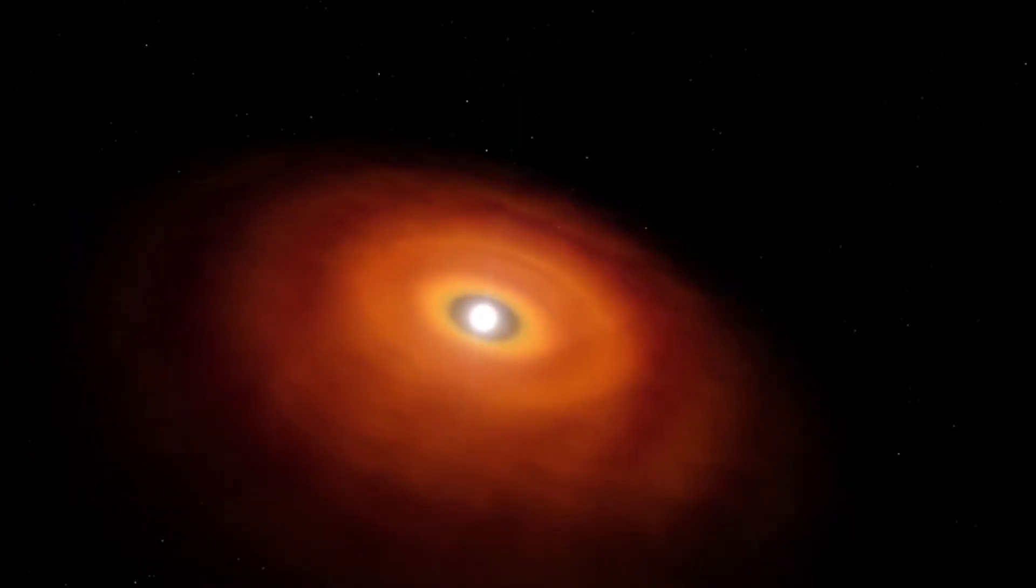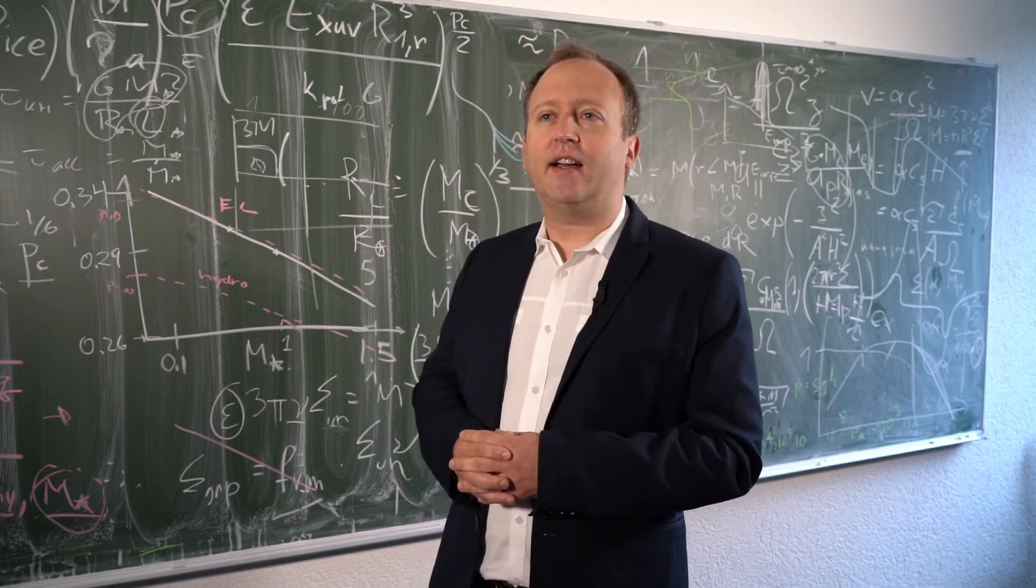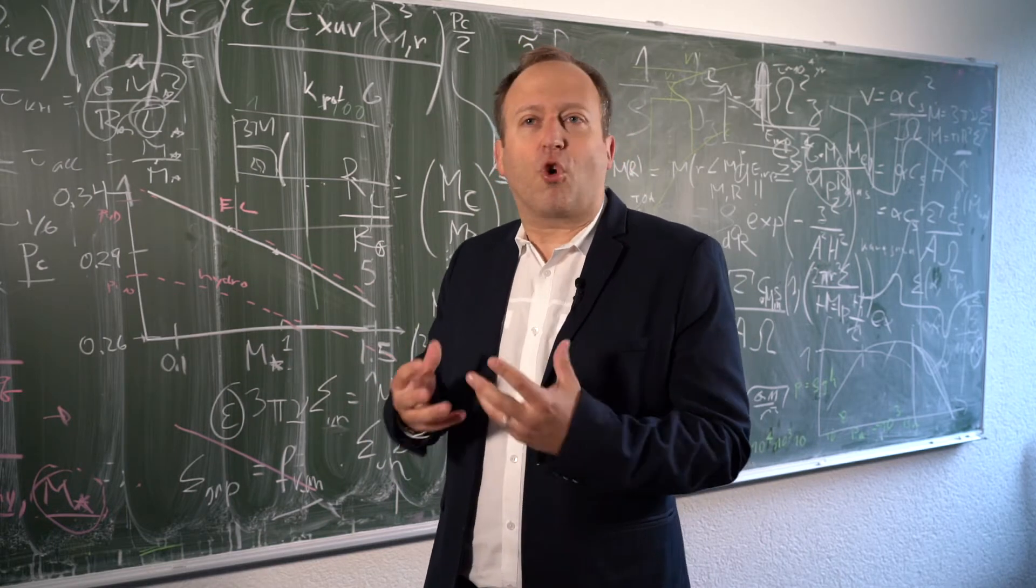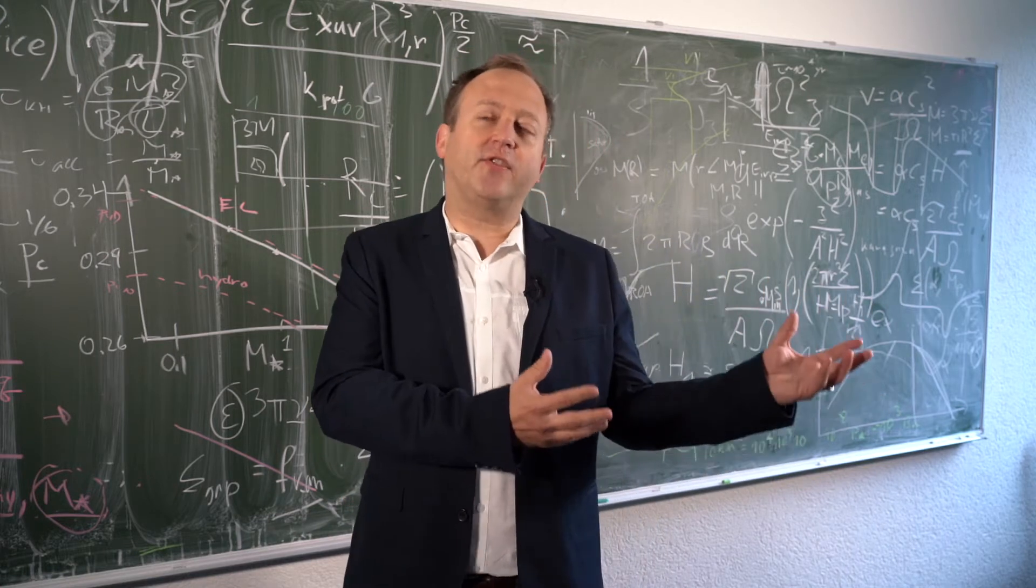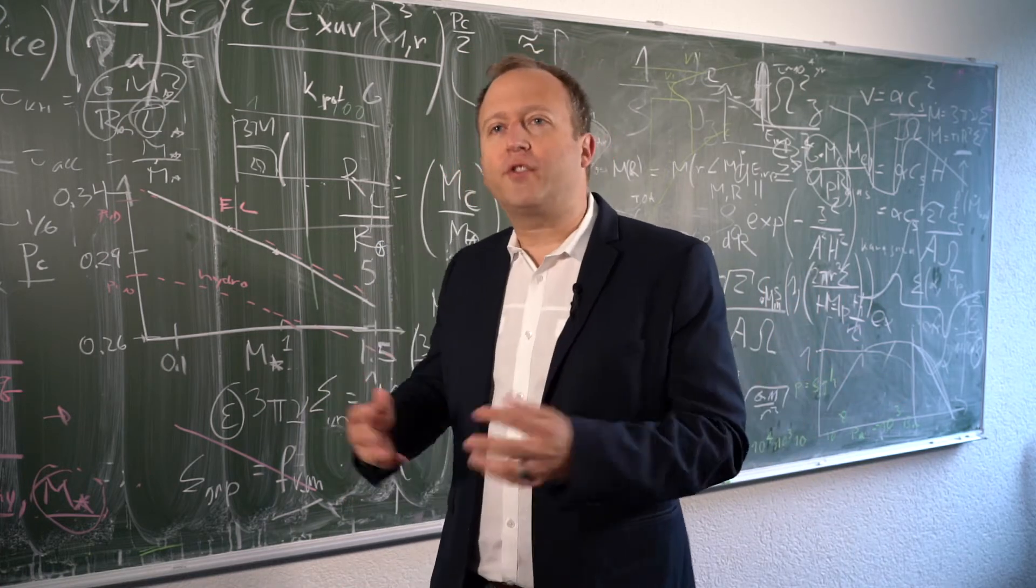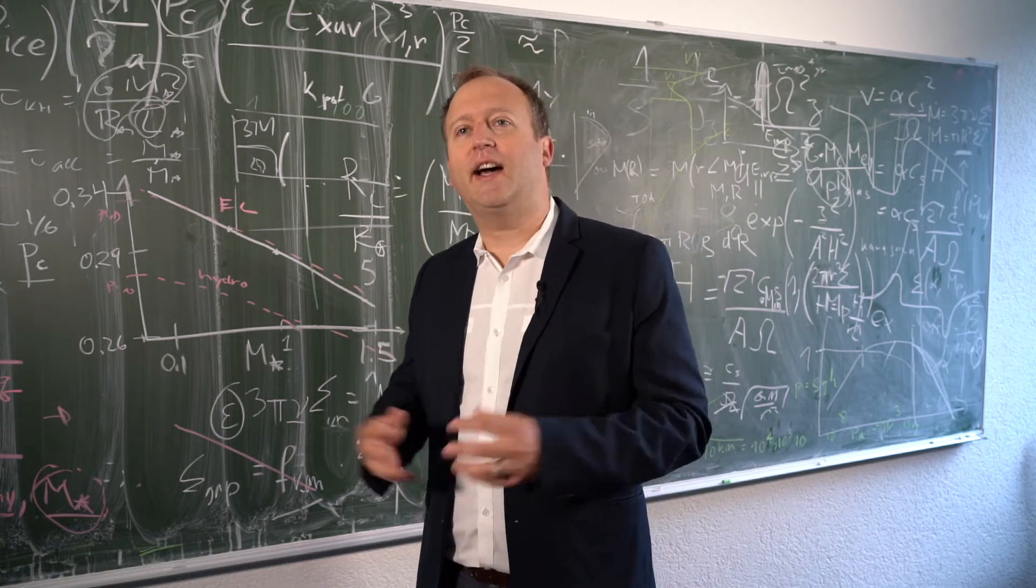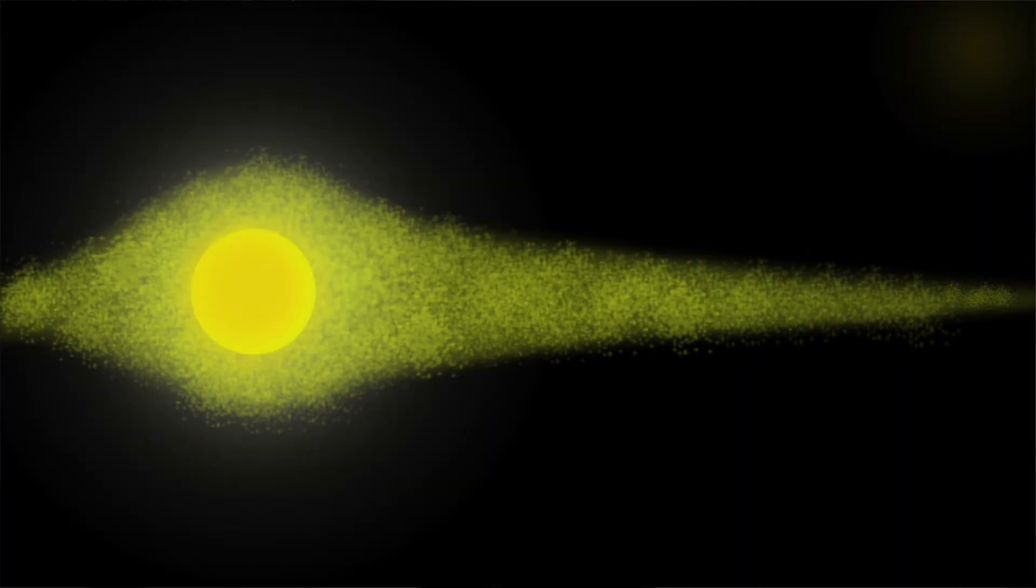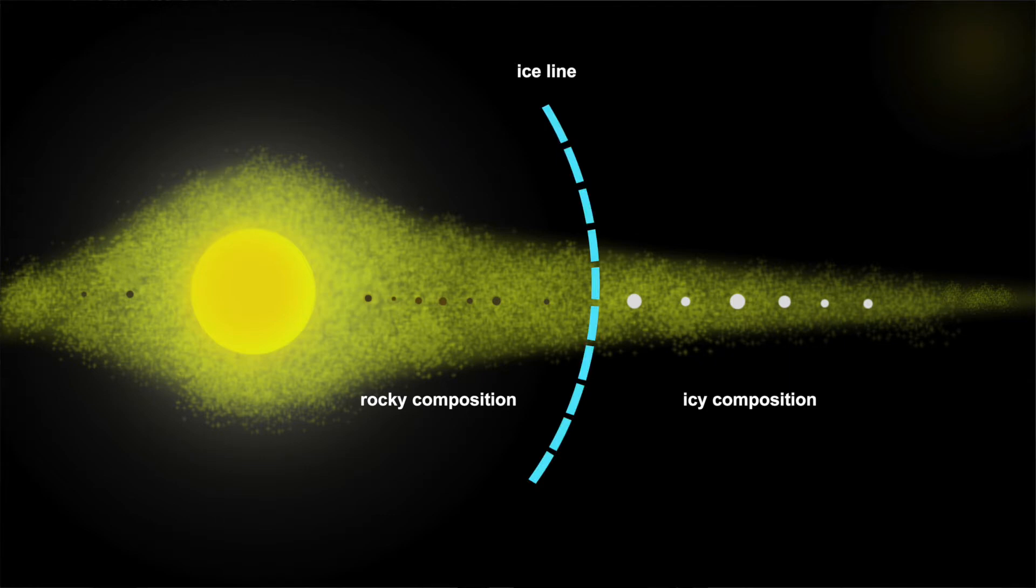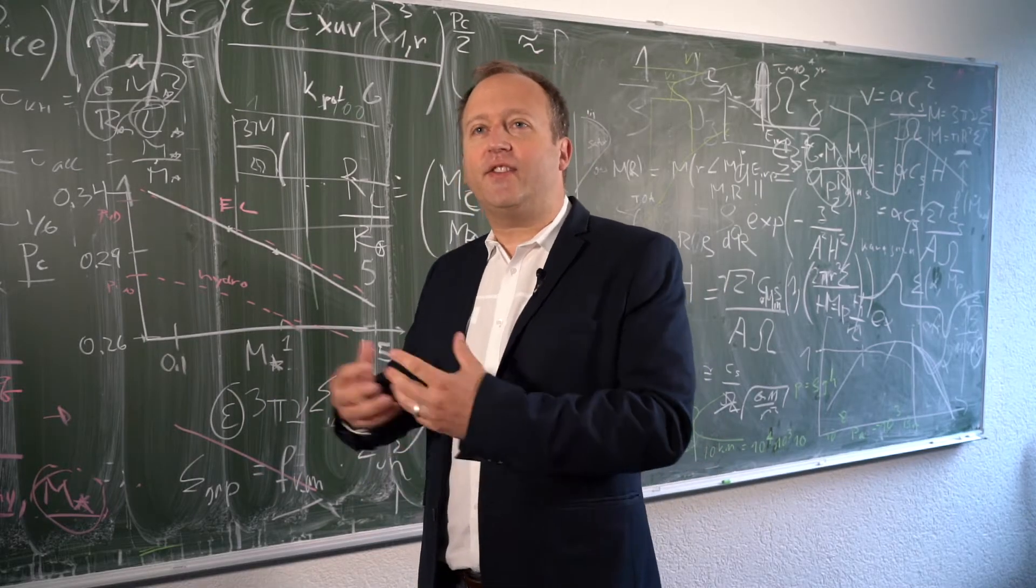This has an important consequence on the composition of the dust grains. In the inside they are made of rocky material, silicates and iron, and outside it's cold enough so that water can condense also. There is a line where there is this change between rocky and icy composition called the ice line, and this explains why in the inside we have terrestrial planets and outside we have giant planets.